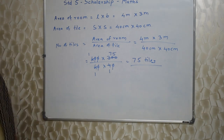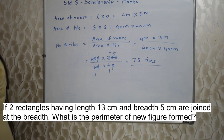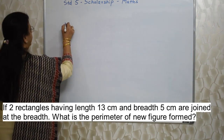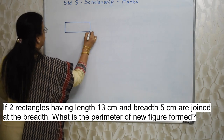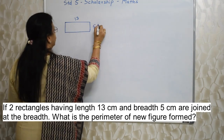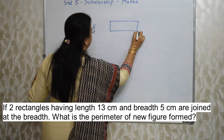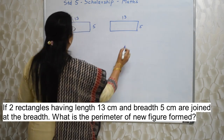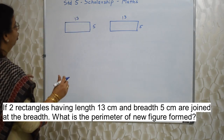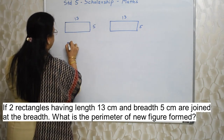Next sum: If 2 rectangles having length 13 cm and breadth 5 cm are joined at the breadth, what is the perimeter of the new figure formed? There are 2 identical rectangles whose length is 13 and breadth is 5. Now they are telling us to join them at the breadth, so they will look like this.